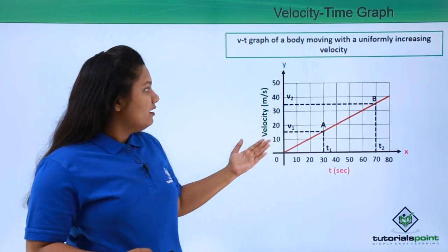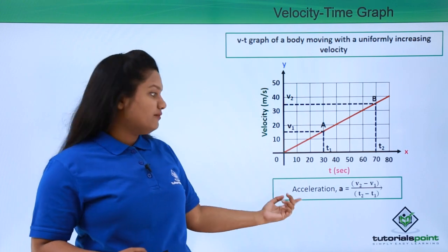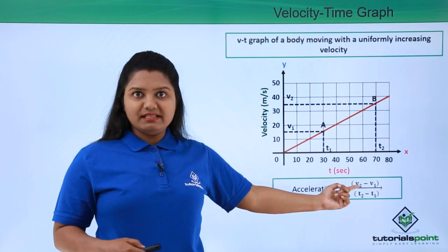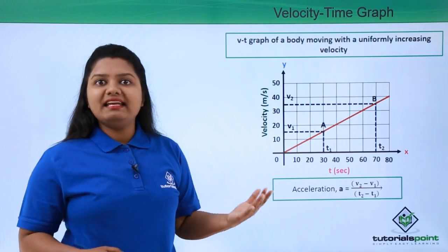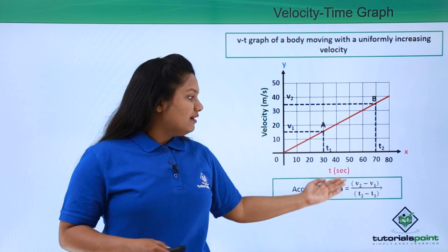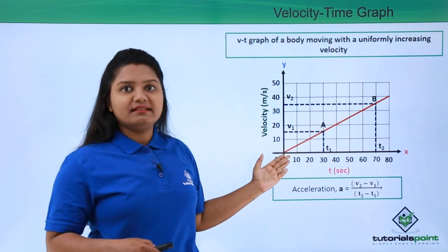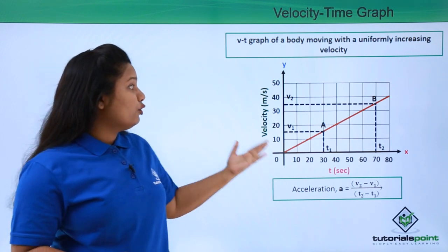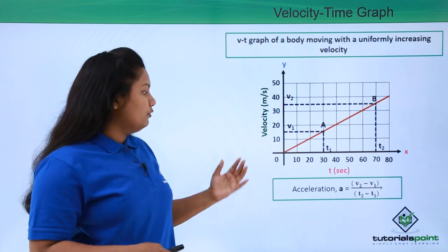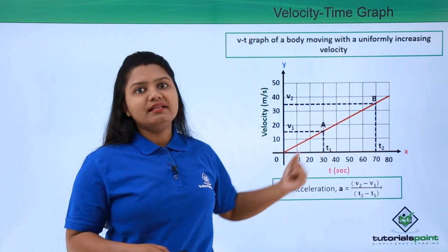So here the acceleration is given by the formula: a equals v2 minus v1 divided by t2 minus t1. This gives us the value of the slope of this graph. So the slope of the velocity time graph gives us the value of acceleration at that instant.